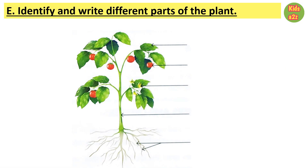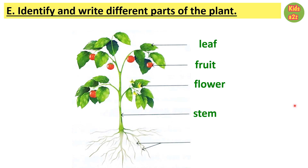In this worksheet, kids need to identify and write different parts of the plant. Starting from the top: this one is leaf, this is fruit, these are flowers, this is the stem of the plant, and these are roots.